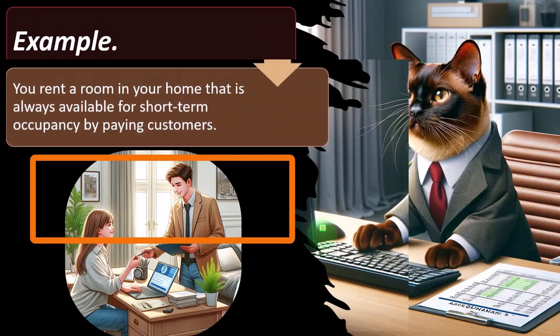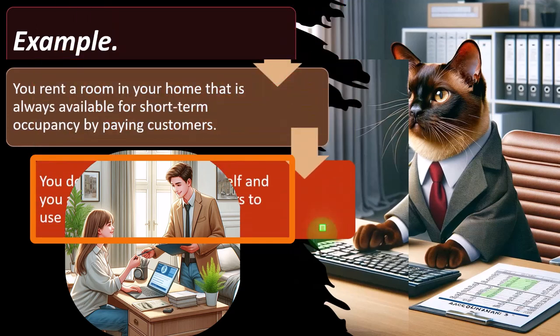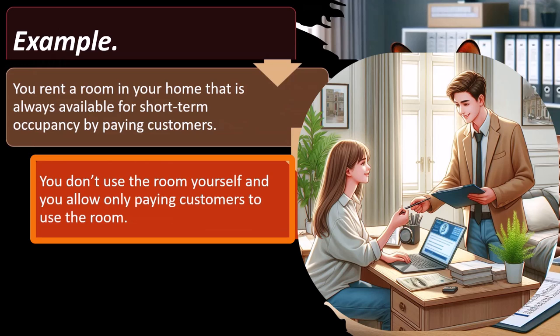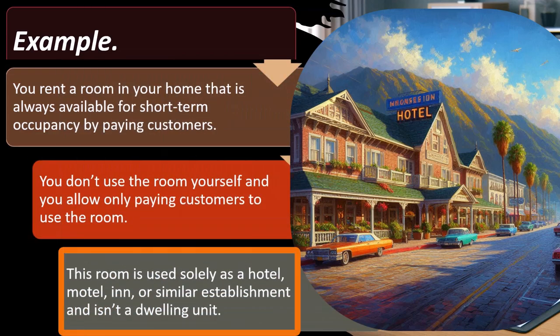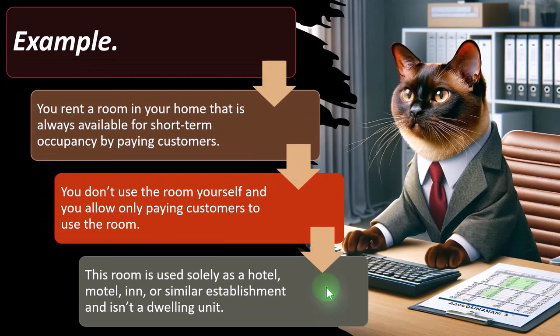Example: you rent a room in your home that is always available for short-term occupancy by paying customers. You're not a hotel — you just have a room you rent out, perhaps because you're near the beach and want extra income. You don't use the room yourself and allow only paying customers to use it. So this room is used solely as a hotel, motel, inn, or similar establishment and is not considered a dwelling unit.